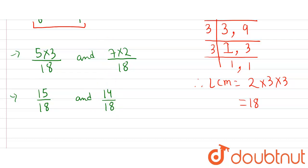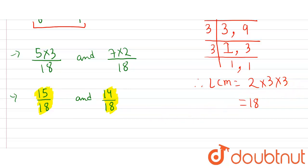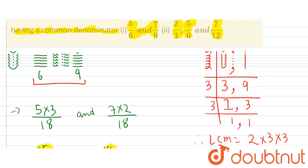Therefore these are the rational numbers having the common denominator 18. Both have common denominator 18. This is the answer of the first part. Now let's take the second part.